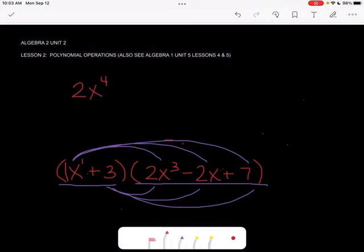Then I've got 1x times negative 2x. So 1 times negative 2 is negative 2. And I've got x the first times x to the first. So that would be x to the second when I add those. And I've got 1x times 7. So that's going to give me 7x.